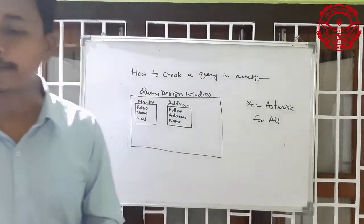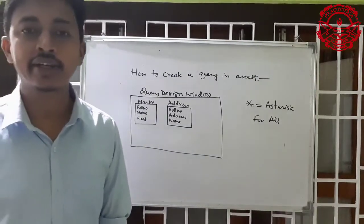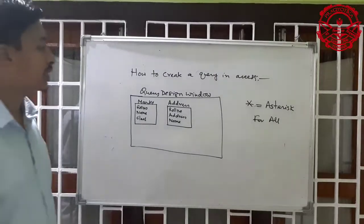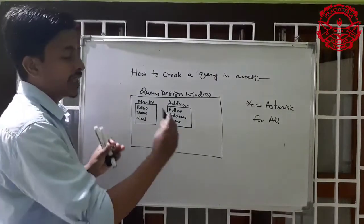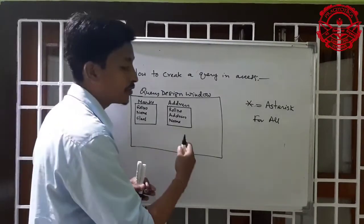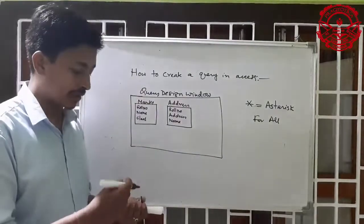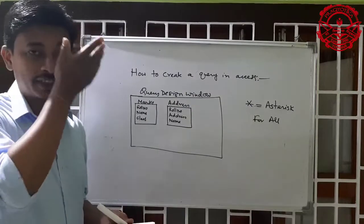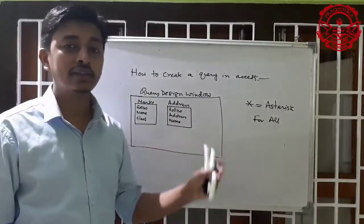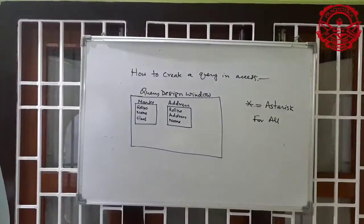You can arrange the fields in the query result in the order you want. You can design it yourself — for example, you can set roll number to appear after name. It is up to you whatever order you want. The basic thing is which field and which information you want.